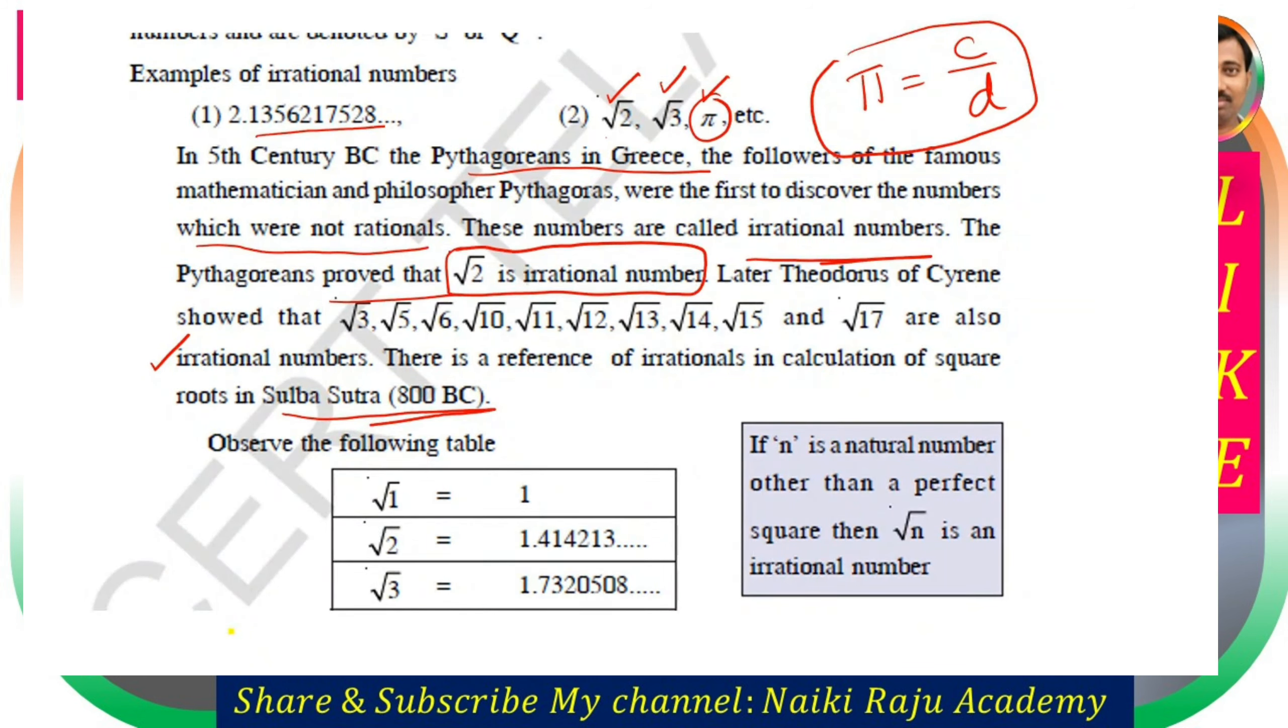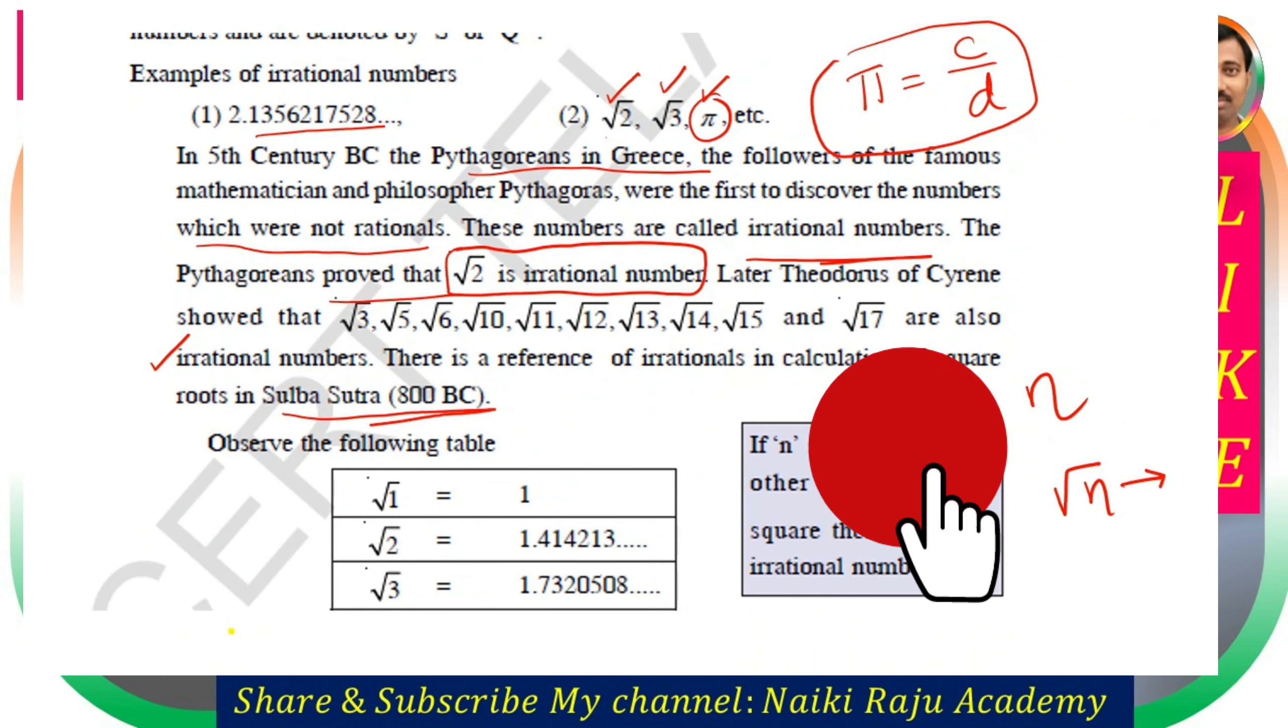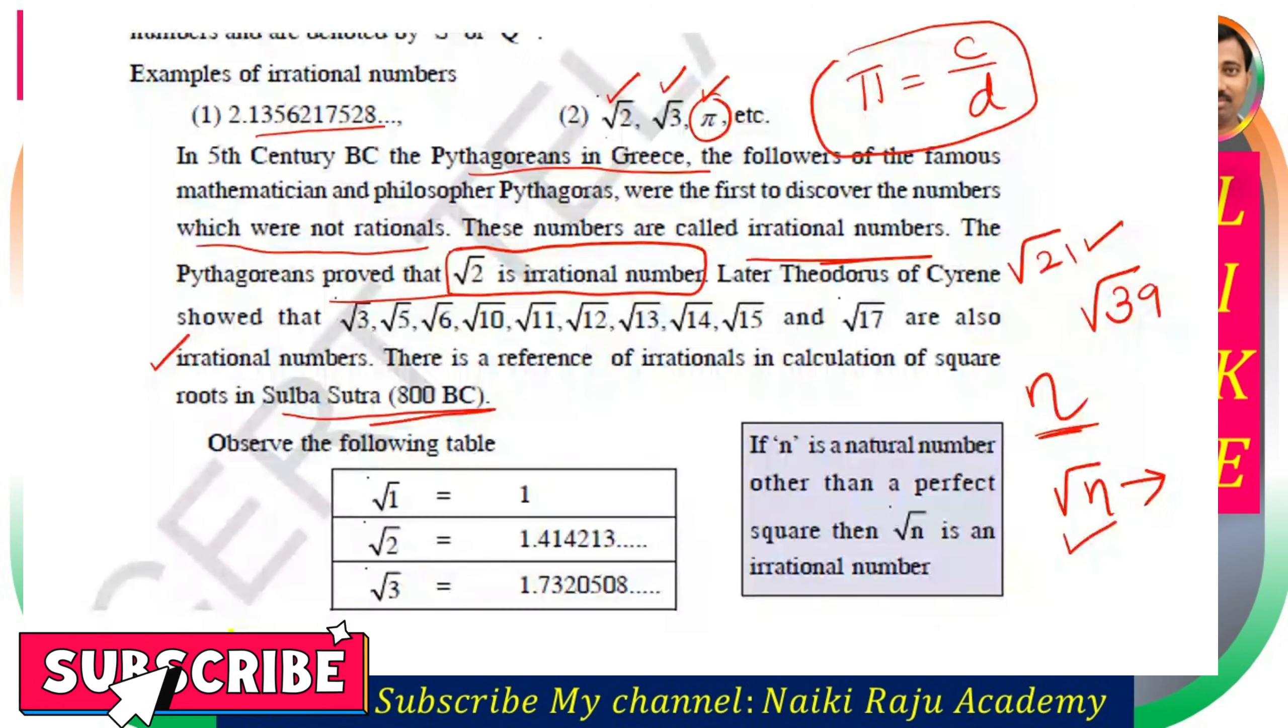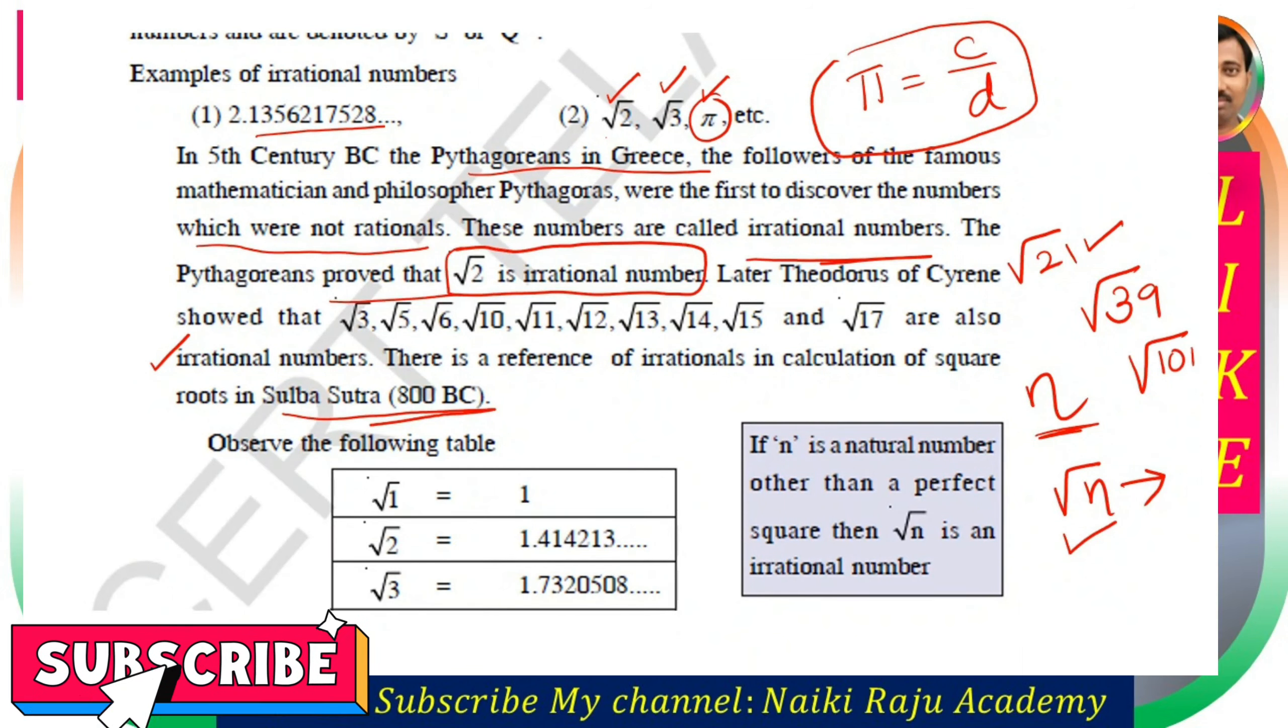Here is an important rule: If n is a natural number that is not a perfect square number, then root n is always an irrational number. For example, root 21 is not a square number, so root 21 is irrational. Root 39 is irrational, root 101 is irrational. If n is not a square number, then the square root of n is always an irrational number.